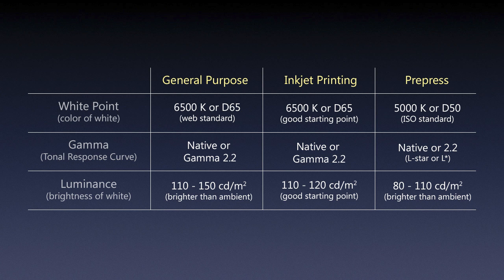So these are the settings I'd recommend for general purpose, inkjet, and pre-press. If you have other schools of thought, there are many people who disagree — on forums you'll find ten people with ten different ideas. These are my recommendations based on my experience and research. Even if you change these settings a little bit, it won't drastically affect your prints, because we'll be doing soft proofing and there are other ways to improve your print-to-screen match, which we'll cover later.